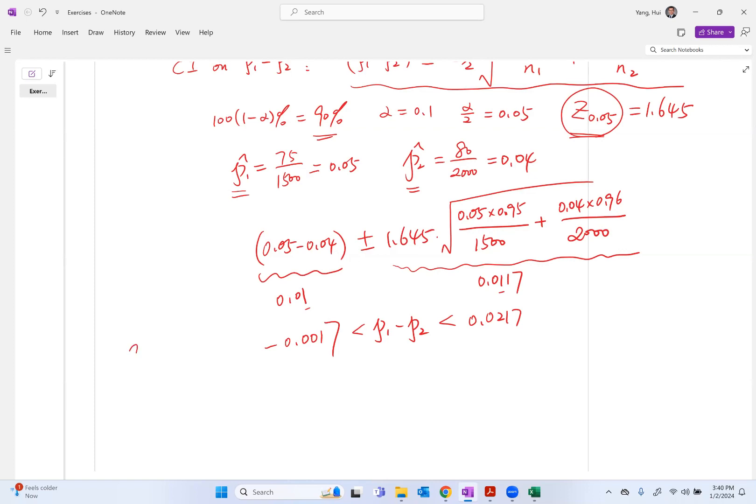So this is the 90% confidence interval for p1 minus p2. This interval does include zero, which means zero is inside this interval. So there is no reason to believe that the new process produces a significant improvement or significant decrease in the proportion of defectives over the existing process.